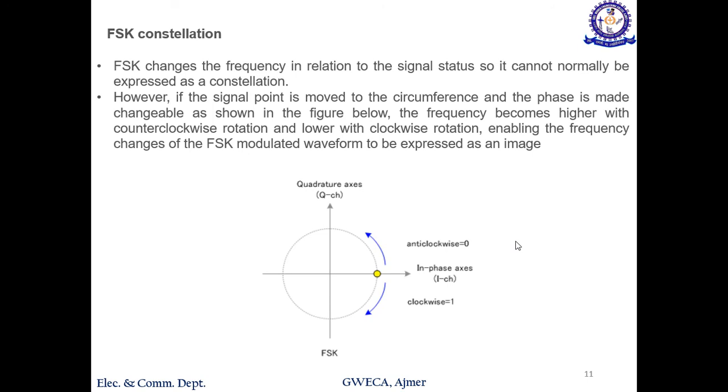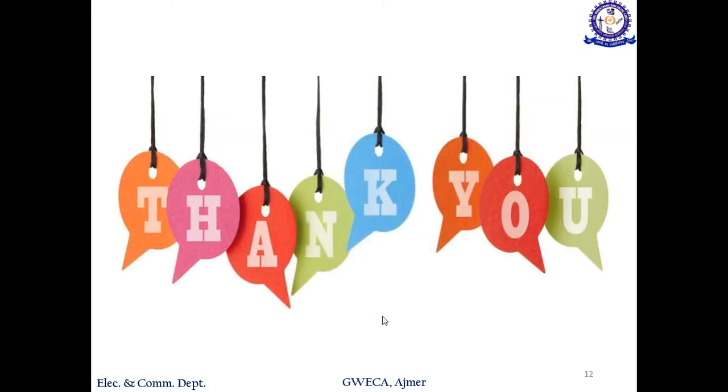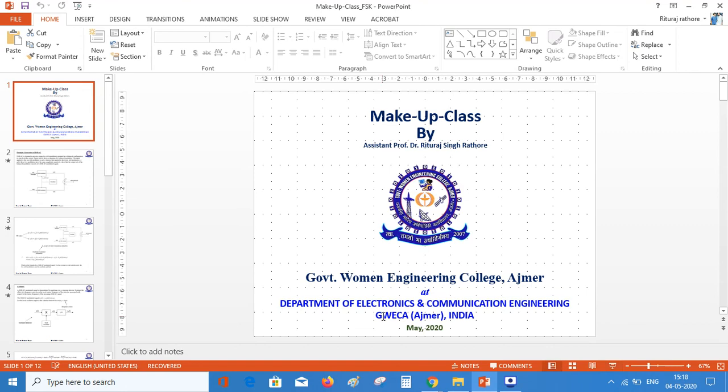This is a constellation diagram. In FSK, the frequency changes in relation to the signal, so it cannot be normally expressed in the constellation diagram. However, this is not important. If you want to draw, then you can draw this: one cycle, this is the quadrature axis and this is the in-phase axis, clockwise and counterclockwise. The frequency variation can be shown this way. That's all for today. Thank you for listening.